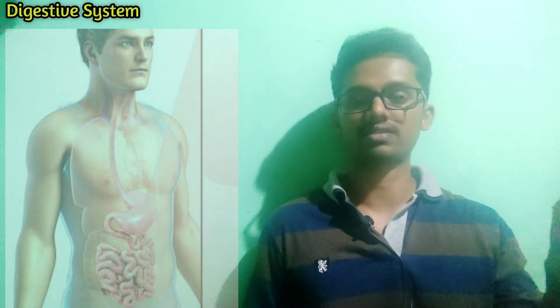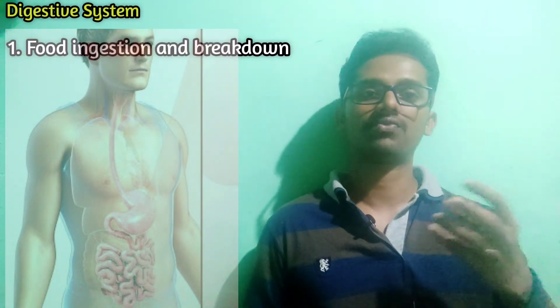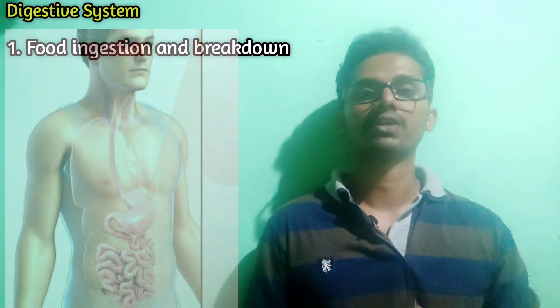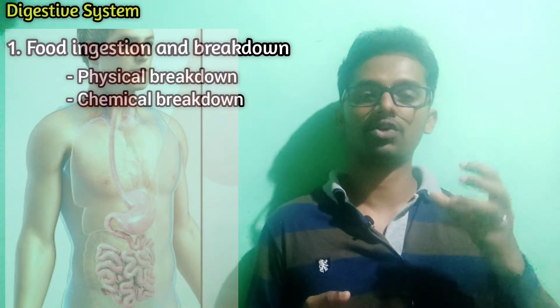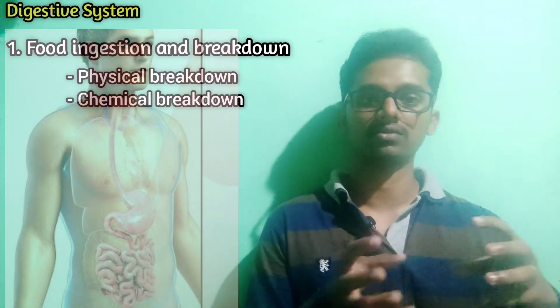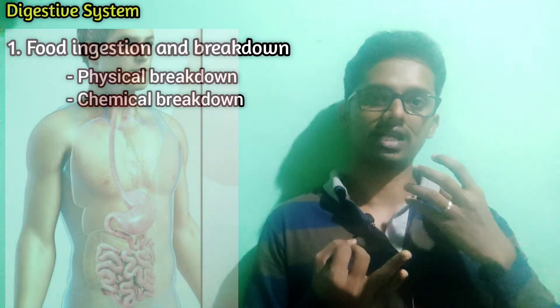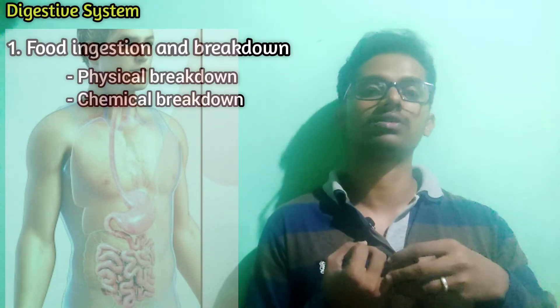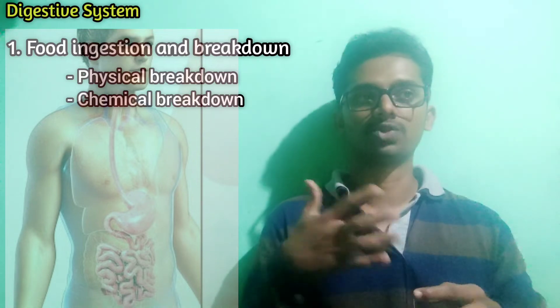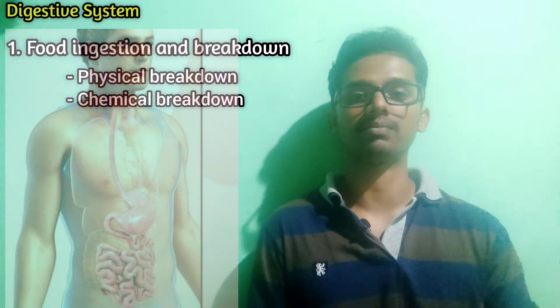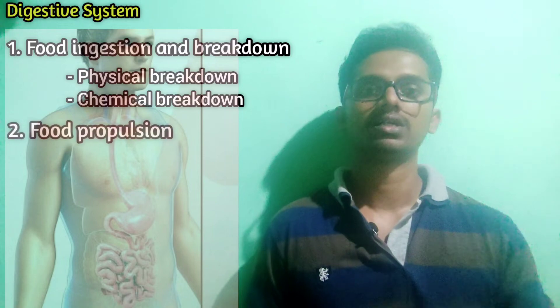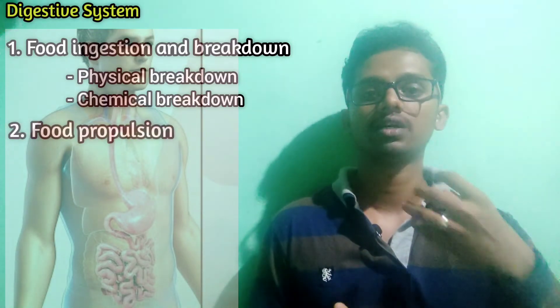Now we will look at the physiology of the digestive system, which involves five to six phases. The first step is food ingestion and breakdown. When food enters the mouth, it undergoes physical breakdown through chewing — the teeth mechanically break the food into smaller pieces. Then there is chemical breakdown, where salivary glands produce chemicals such as salivary amylase to digest the food. After ingestion and breakdown, the food enters the esophagus.